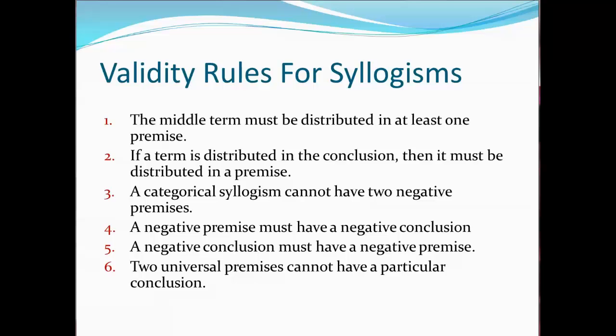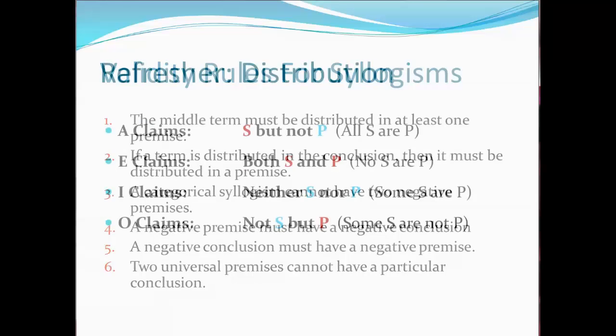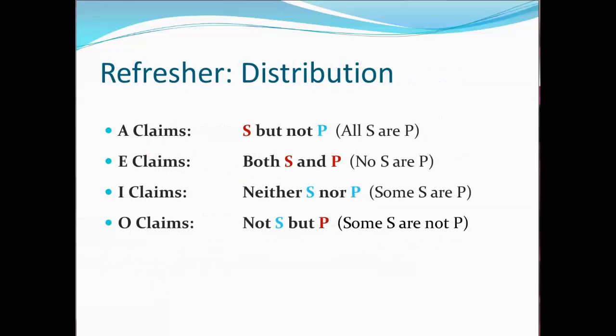First I'll review what the mood and figure tell us about syllogisms, and then apply the first two rules. A term is distributed when it says something about all of the members of a category, and it is undistributed when it doesn't say something about all of a category. The A claim distributes its subject but not its predicate. The E claim distributes both its subject and predicate. The I claim doesn't distribute either one, and the O claim distributes its predicate but not its subject.